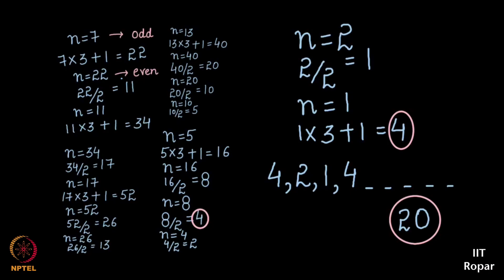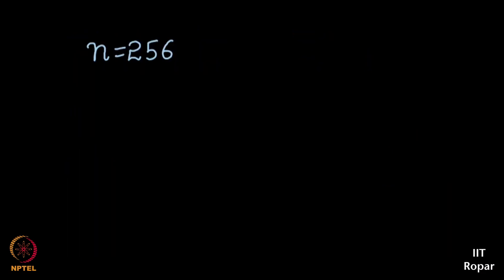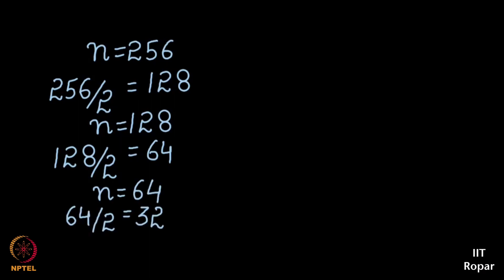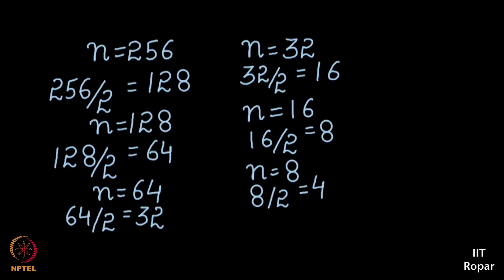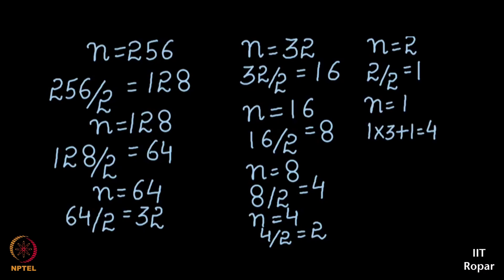Let us take some number, big number like 256. How many steps will it take? Let us count. 256 is even, half of that is 128. 128 is again even, half of that is 64, even again 32, even again 16, even once again 8, even again 4, even again 2 and that then becomes 1. 1 is odd, so 1 becomes 4 into 3 plus 1, 4 and then 4 becomes 2, 2 becomes 1 and you enter and you stop here.